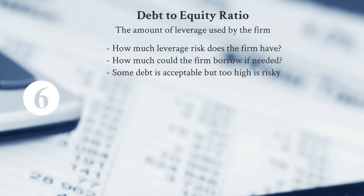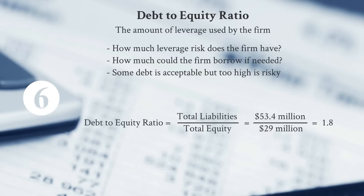Some debt is reasonable and can actually increase returns to shareholders, but beyond a certain level the risk gets too high and decreases operational flexibility. Debt-to-Equity is total debt or liabilities divided by total equity. In this case, we get 1.8 — meaning $1.80 of debt for every $1.00 of equity in the firm.